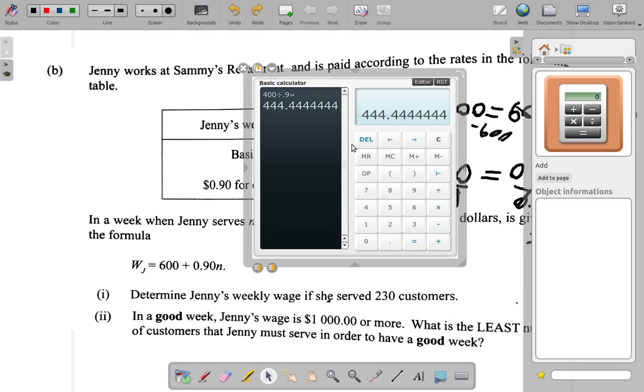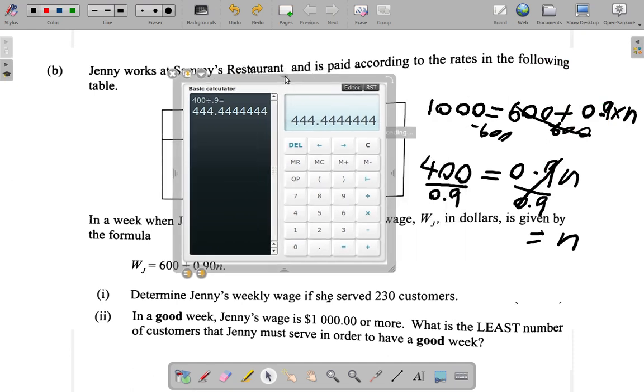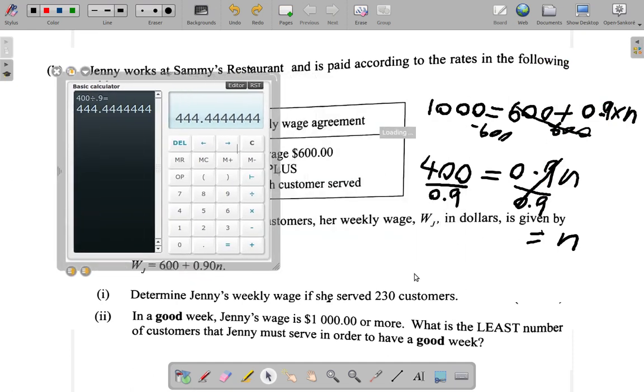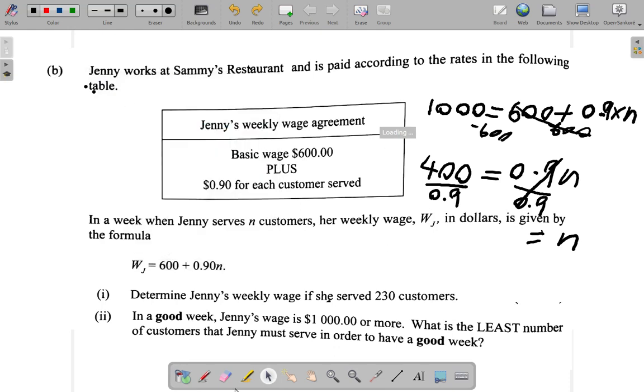444. Now this is 454.44. Let's use that, 454.44. Let's write that down. Let's get rid of the calculator out of the way.